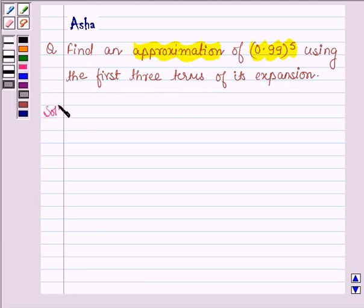Let us now begin with the solution. We have to find the approximation of 0.99 raised to the power 5, which can be written as 1 minus 0.01 raised to the power 5.